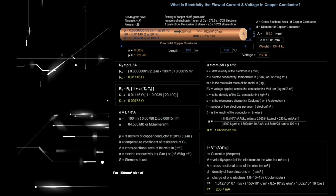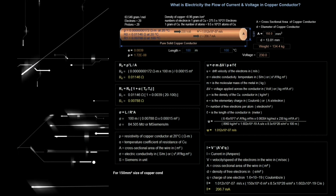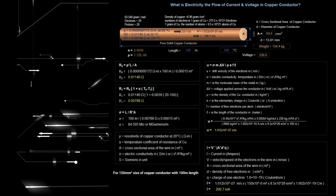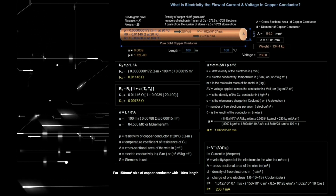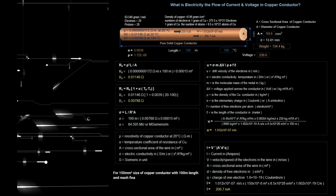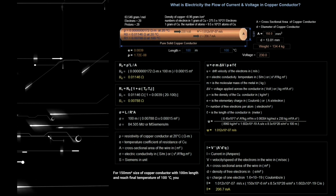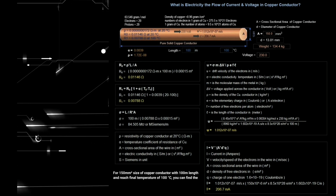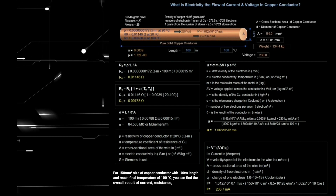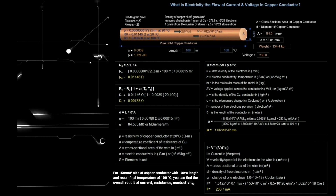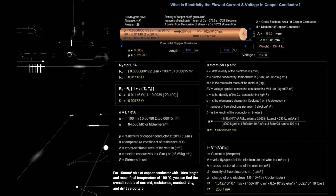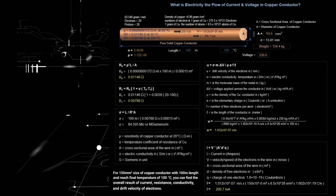For a 150 square millimeter size copper conductor with 100 meter length, and reaching a final temperature of 100 degrees Celsius, you can find the overall result of current, resistance, conductivity, and drift velocity of electrons.